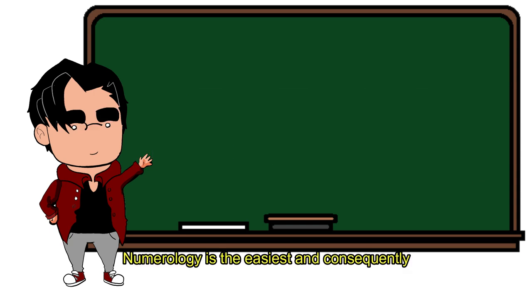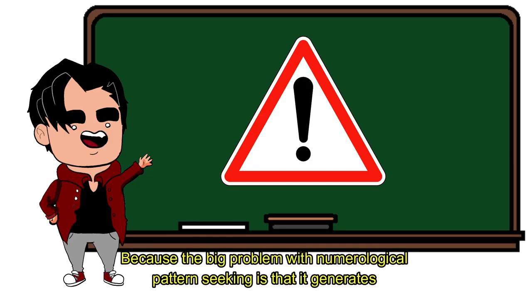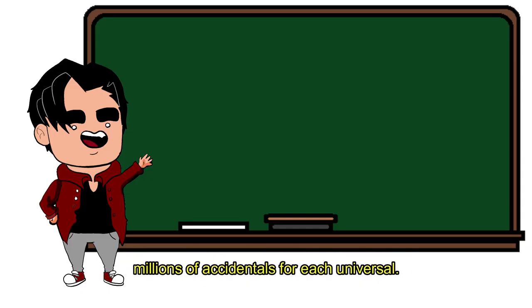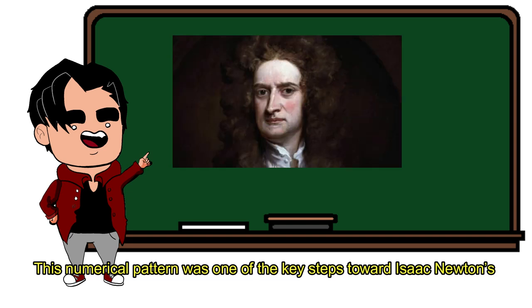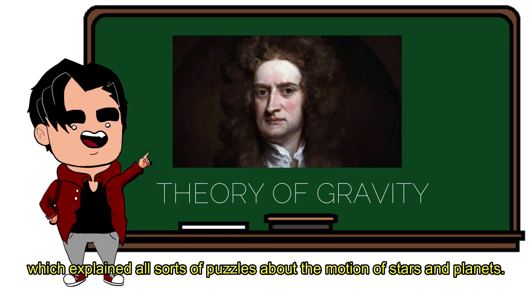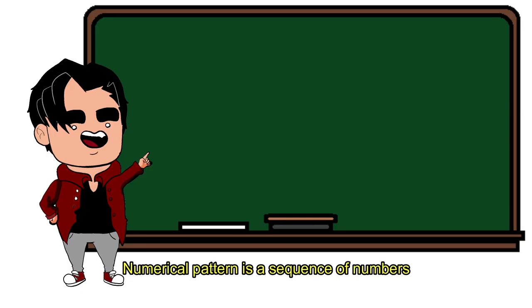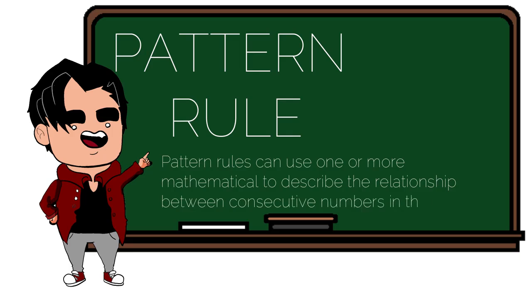Numerology is the easiest and consequently the most dangerous method for finding patterns, because the big problem with numerological pattern seeking is that it generates millions of accidentals for each universal. This numerical pattern was one of the key steps towards Isaac Newton's theory of gravity, which explained all sorts of puzzles about the motion of stars and planets. A numerical pattern is a sequence of numbers created based on a rule called a pattern rule. Pattern rules can use one or more mathematical operations to describe the relationship between consecutive numbers in the sequence.